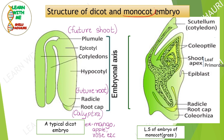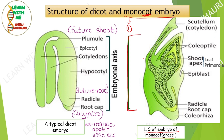Now let us discuss the structure of the monocot embryo. 'Mono' stands for single or one, and 'cot' stands for cotyledons, so a monocot embryo has a single cotyledon. This image is also taken from the NCERT book, which explains the embryo of monocot grasses. In a monocot embryo, the embryonal axis is present on one side of the single cotyledon, which is called the scutellum. So in monocots we call it scutellum, while in dicots the same structure is called cotyledons.